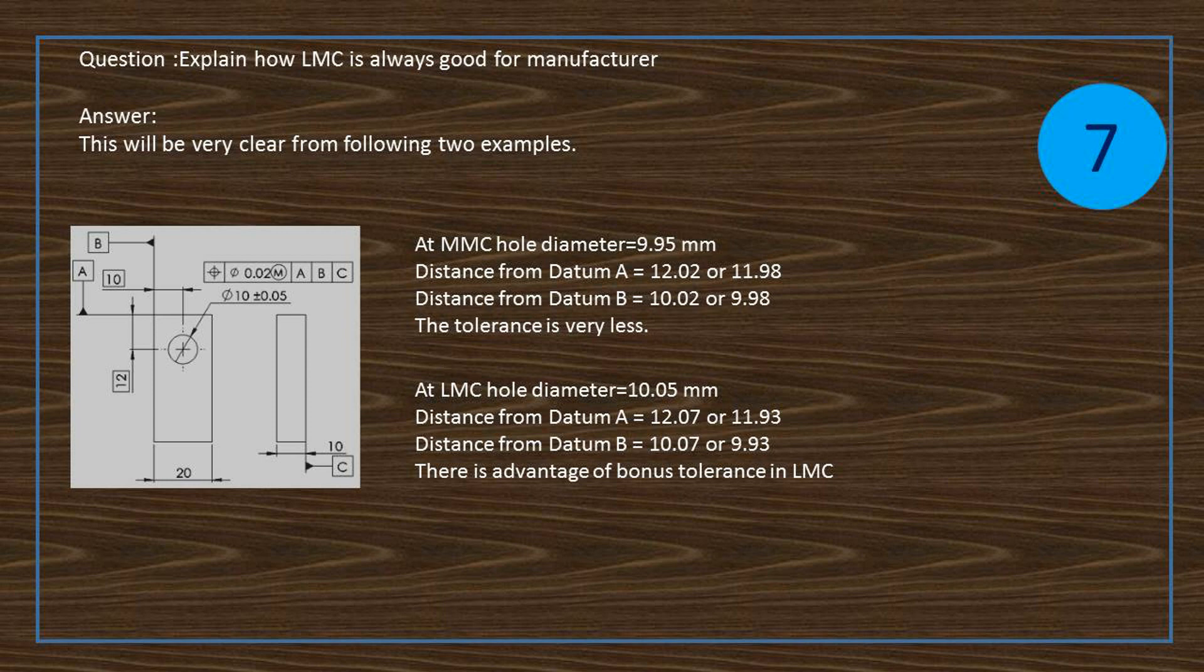At MMC, hole diameter equals 9.95 mm. Distance from datum A equals 12.02 or 11.98. Distance from datum B equals 10.02 or 9.98. The tolerance is very less at MMC.